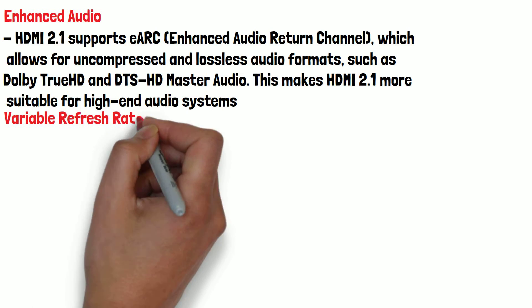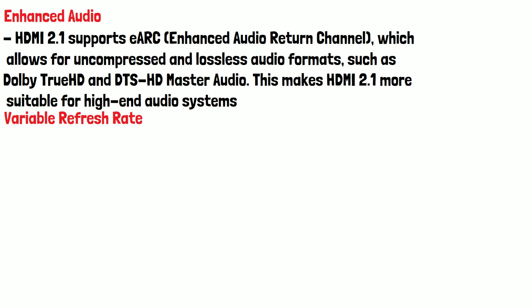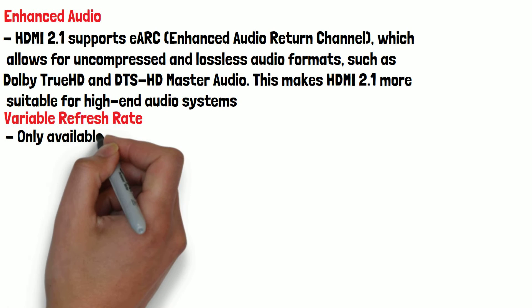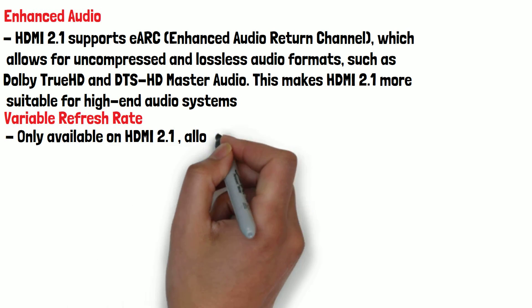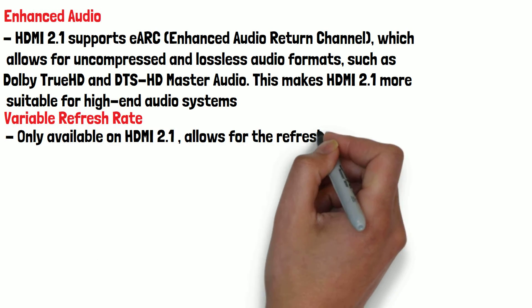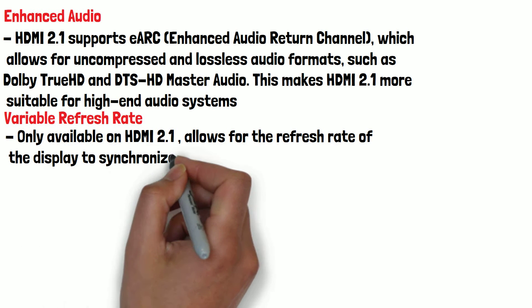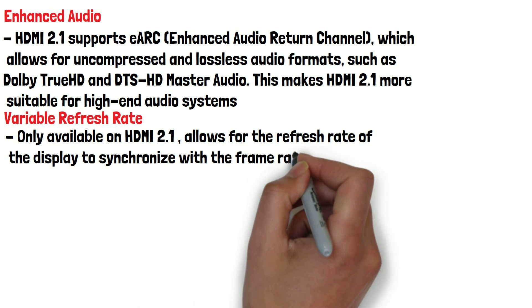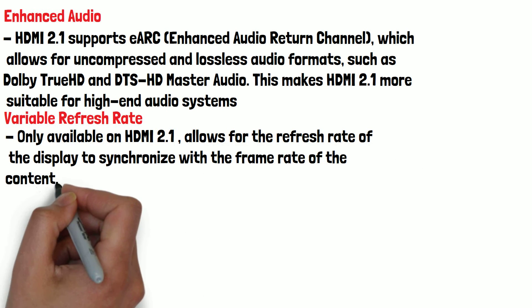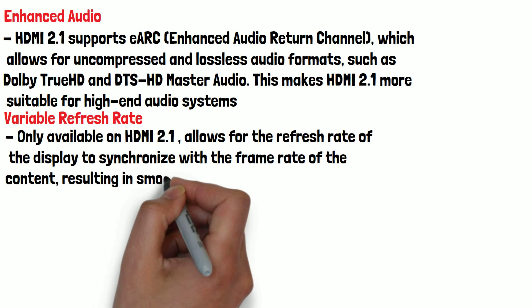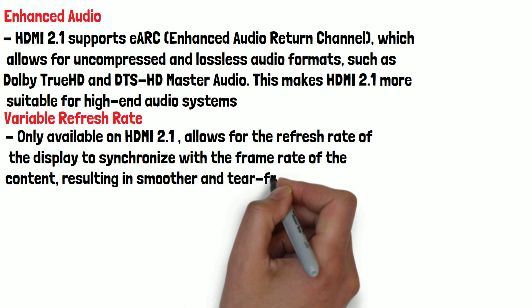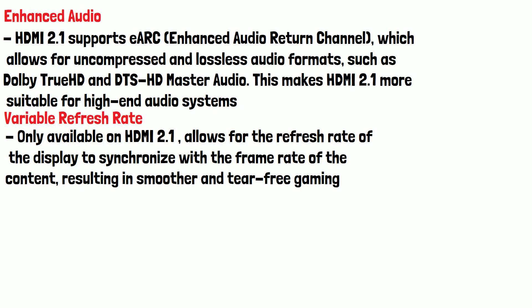Variable refresh rate is only available on HDMI 2.1. This allows for the refresh rate of the display to synchronise with the frame rate of the content, resulting in much smoother and tear-free gaming. HDMI 2.0 does not support this.